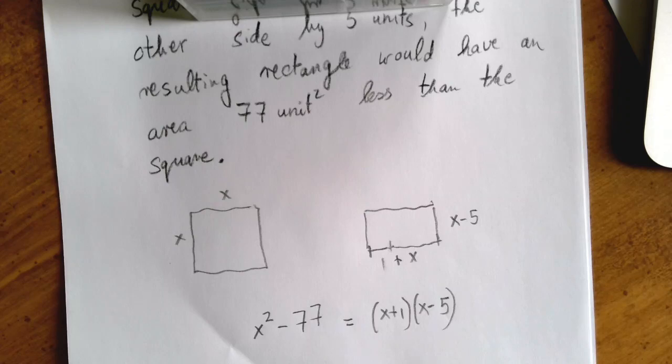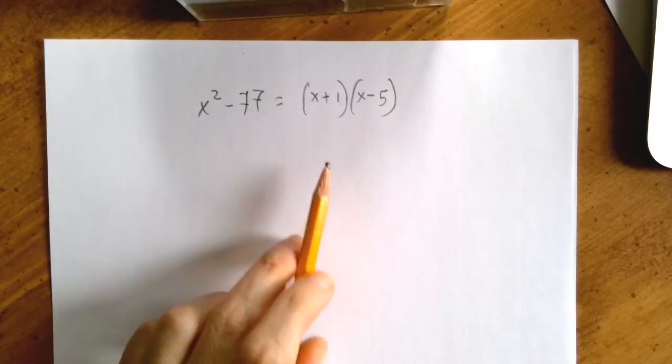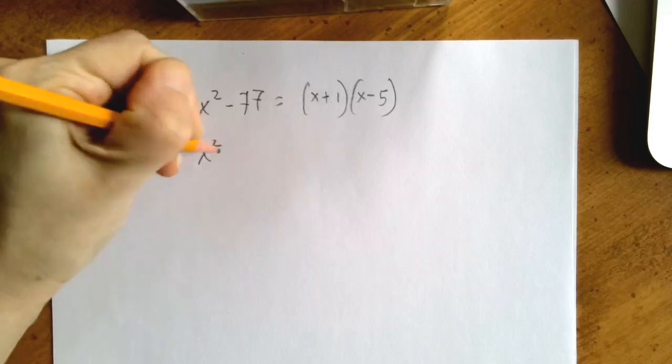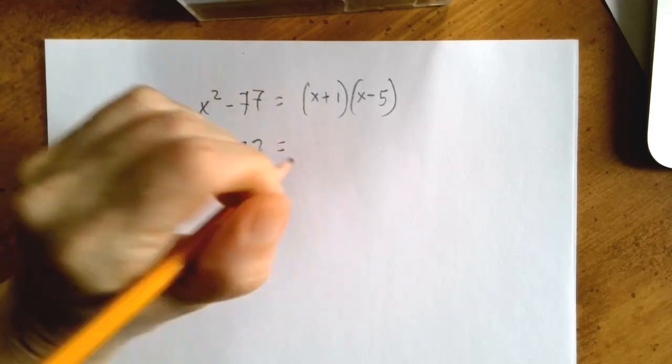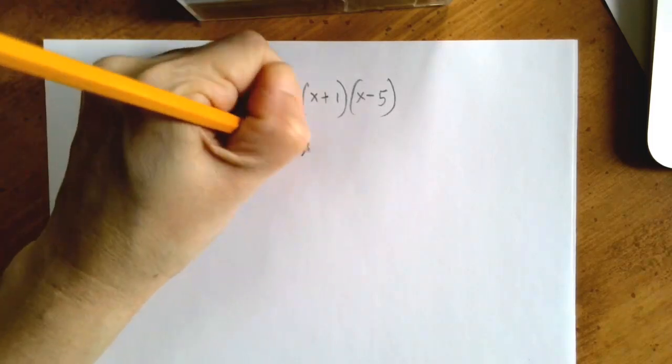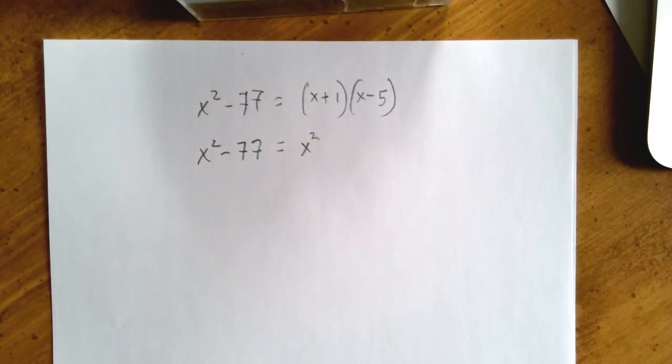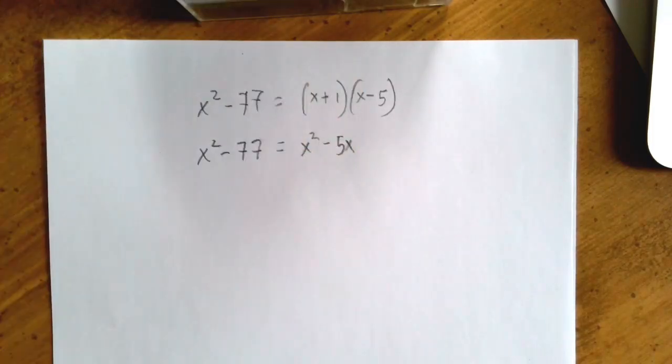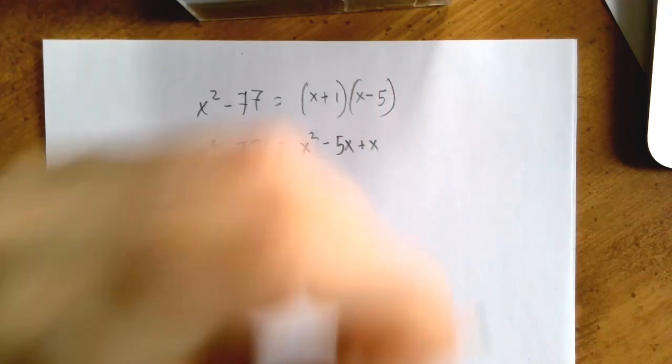And so the word problem is over for a while because now we have to solve this apparently quadratic equation. So let's do that. First, we're going to apply the distributive law to expand this product. We're not going to mess with the left-hand side yet. So x times x is x squared, x times negative 5 is minus 5x, plus 1 times x is plus x, and plus 1 times minus 5 is negative 5.